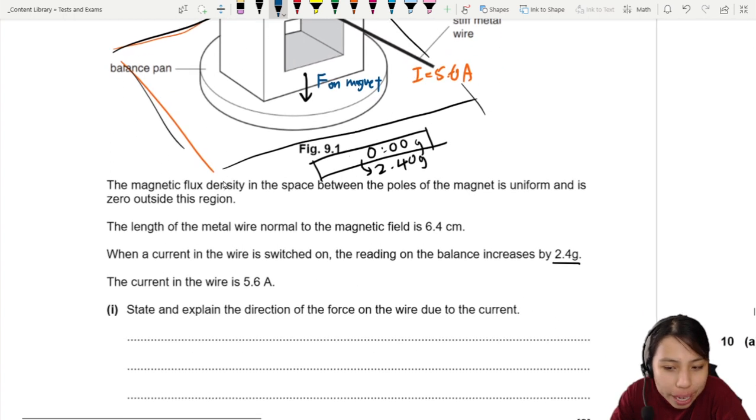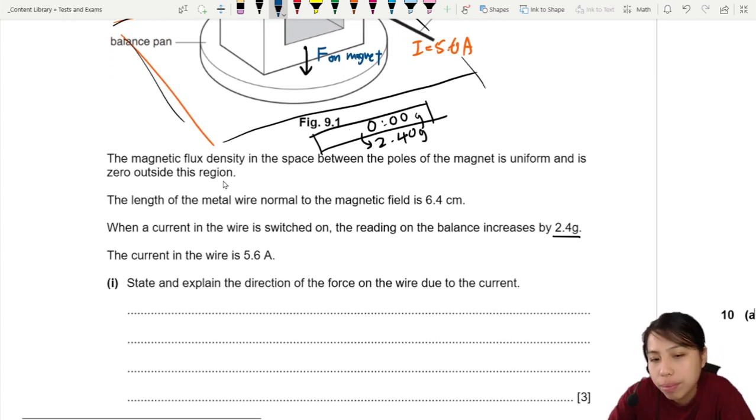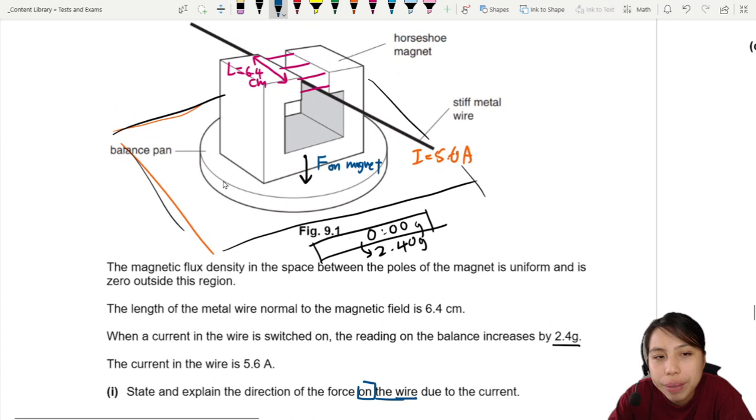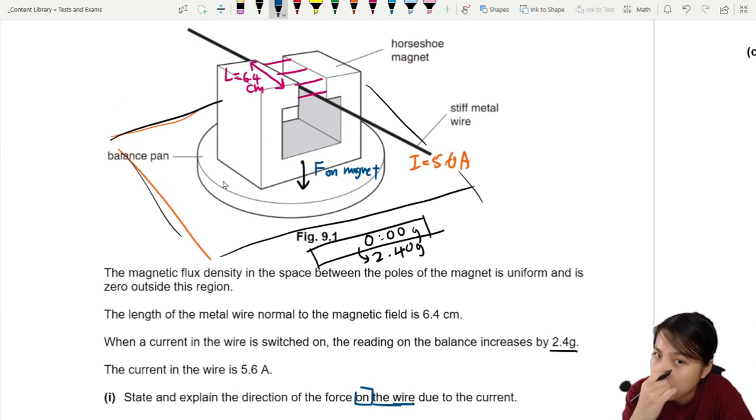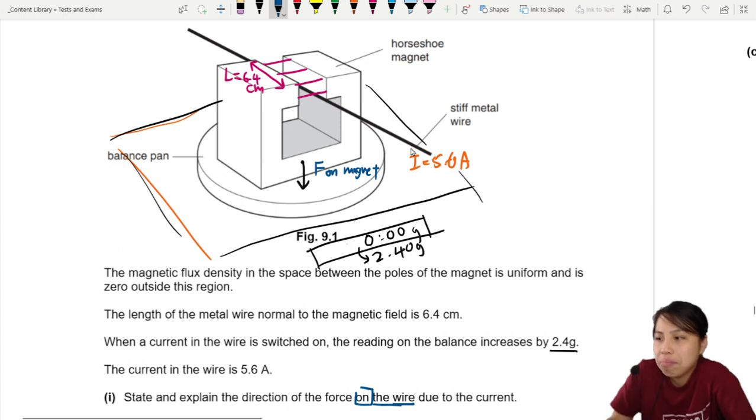We need to state and explain though, the direction of force on the wire. On the wire. Not on the magnet. So let's go back. We cannot use Fleming's left hand rule here because they didn't tell us the direction of current. And they didn't tell us the direction of magnetic field. This 5.6A is going which direction? Don't know. This magnetic field is point to the left or point to the right? Don't know. Never mind.